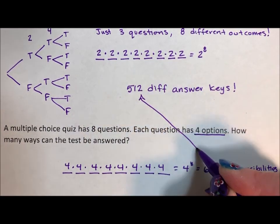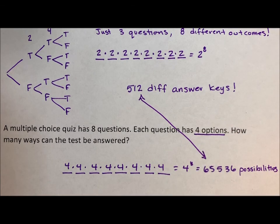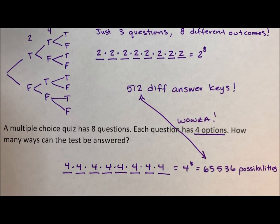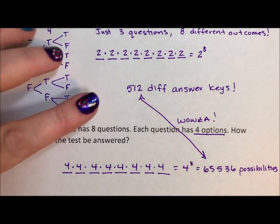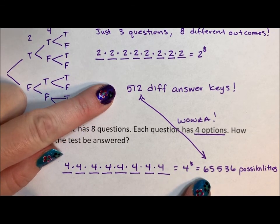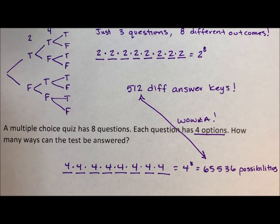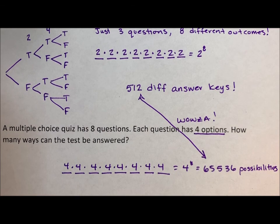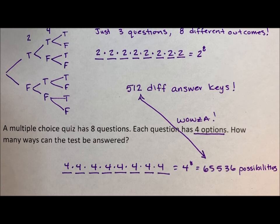So if we compare these, that's a big difference. And this is why they say if you can eliminate two, it might be worth guessing. But if you can't eliminate two, yeah, that's eight questions. One in 65,000 possibility of guessing those eight correct. 512, much better odds. So this is why you were told only guess if you can eliminate a couple of the options.